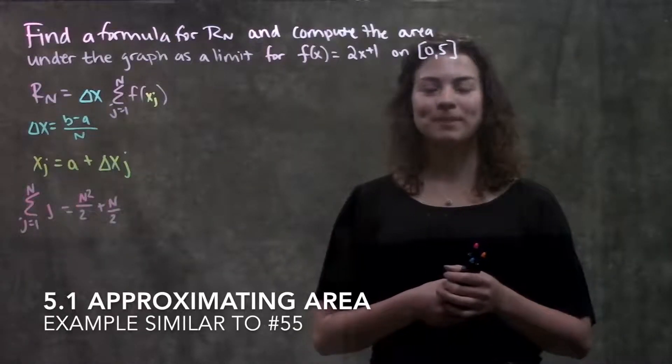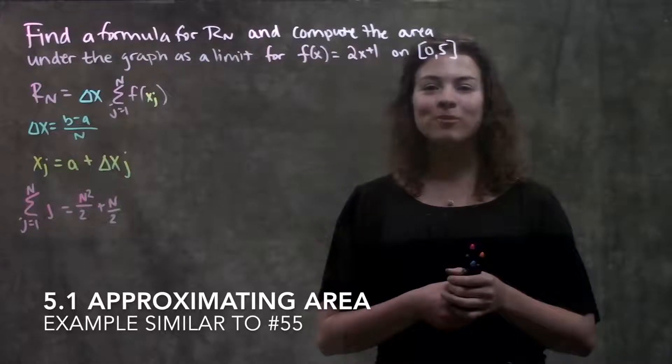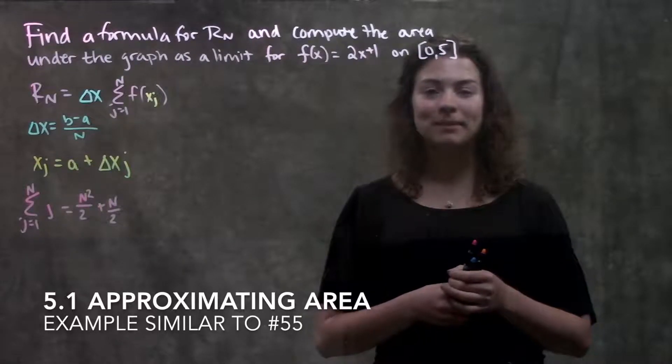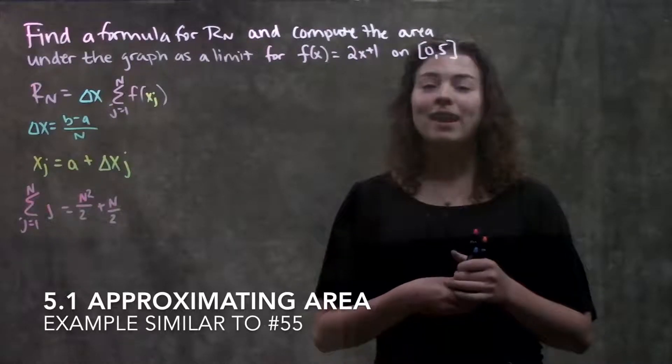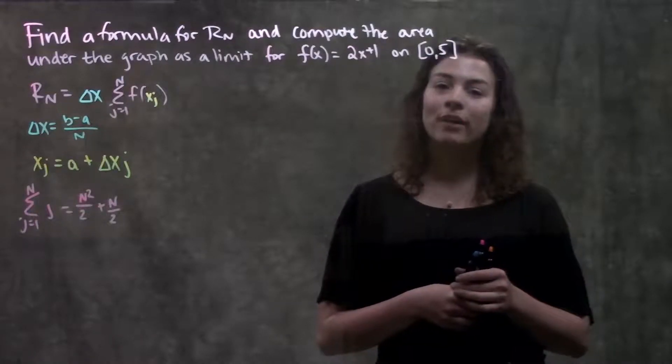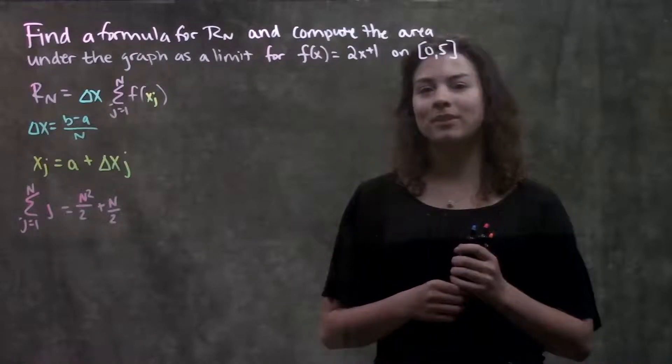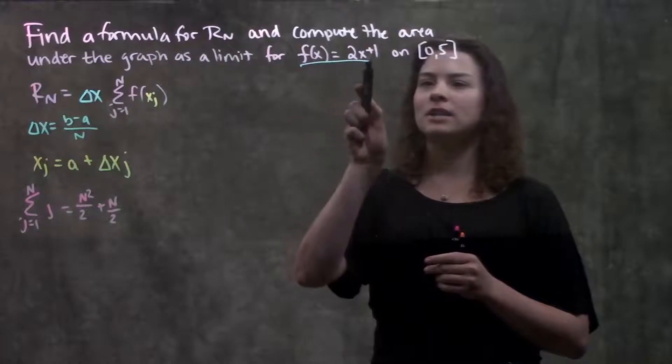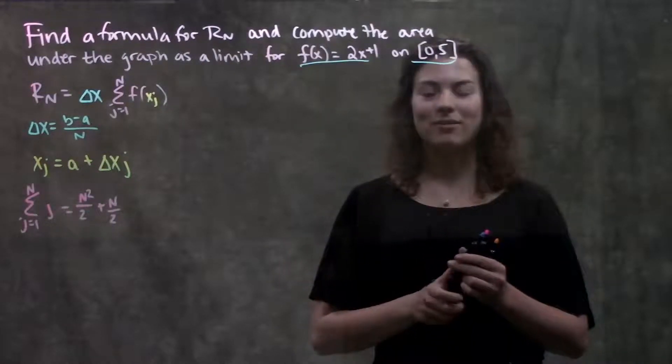This is section 5.1, Approximating Area. In this video, we're going to go through an example problem that's really similar to number 55 in your book. It asks us to find a formula for Rn and compute the area underneath the graph of this function on this interval from 0 to 5.